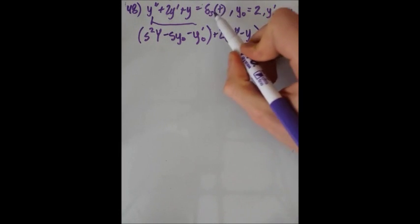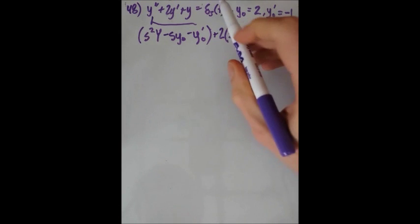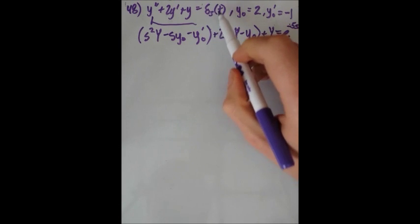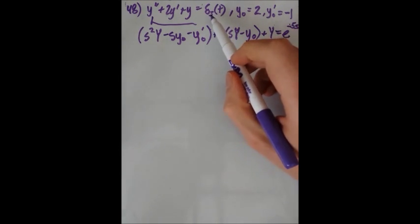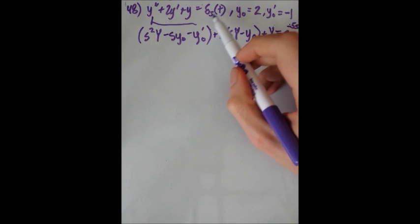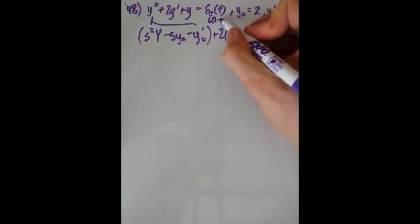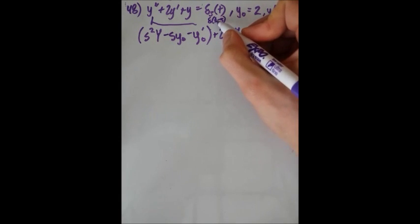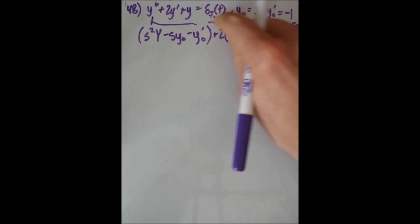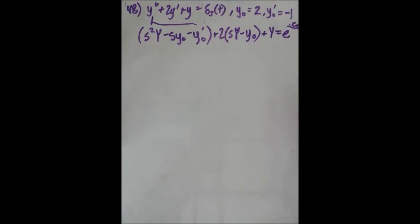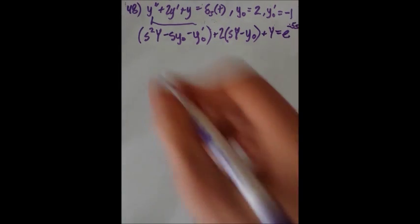This notation — the Dirac of t minus 5 — means the function is zero everywhere except when the argument is zero, i.e., at t equals 5, where it turns on and then is gone for every other value. Either way, e to the minus 5s is the transformed version, and you'll find that in the table too.